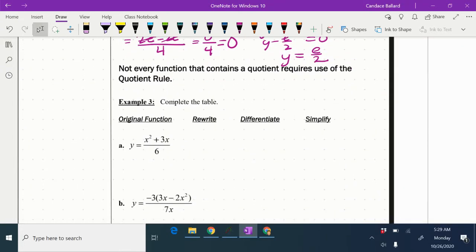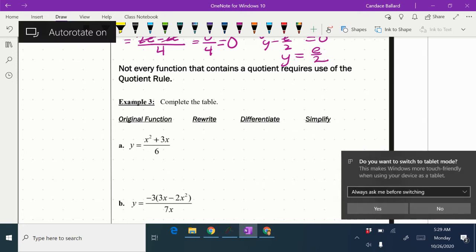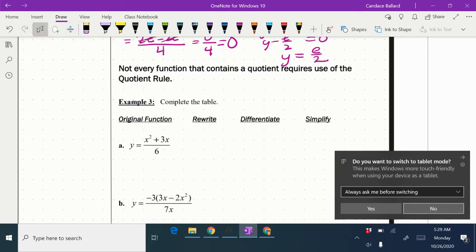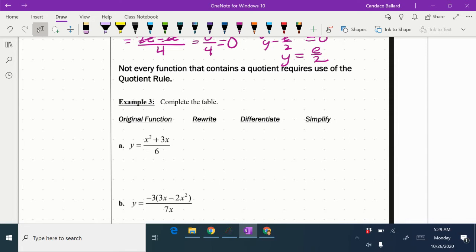In this video, we're going to continue topic 2.9, the quotient rule. In example 3, we have some examples of things that look like quotient rules, but it's probably better to actually rewrite them and just differentiate them with the power rule or some other rules that we have because it'd be more cumbersome to do the quotient rule.